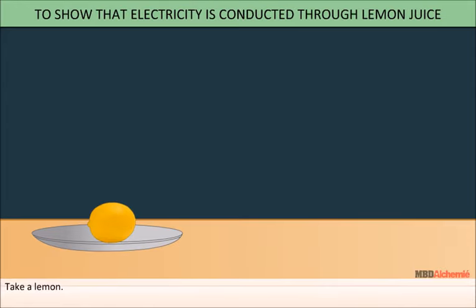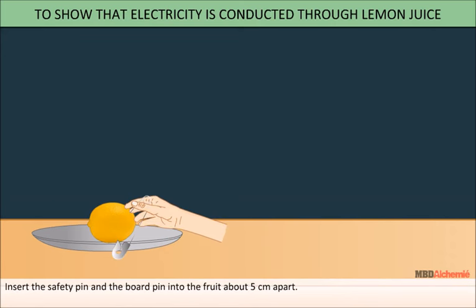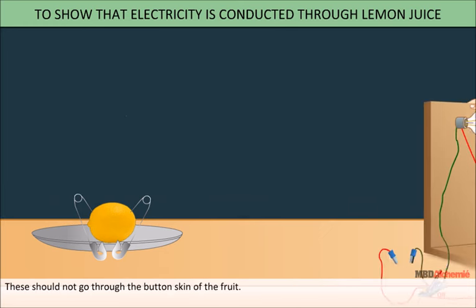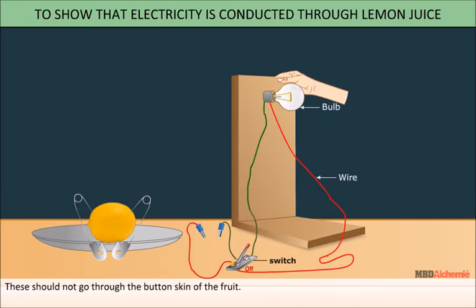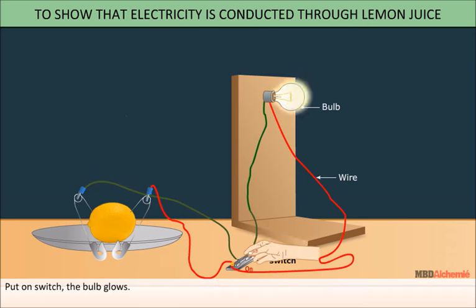Take a lemon. Roll it to soften the skin but be careful not to break it. Insert the safety pin and the board pin into the fruit about 5 cm apart. These should not go through the bottom skin of the fruit. Twist the wires around the safety pin and board clip. Now, connect the open ends of wires around the switch and bulb. Put on the switch. The bulb glows.